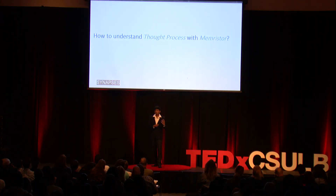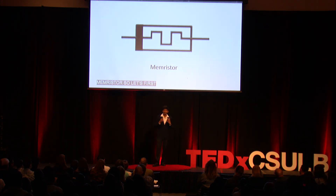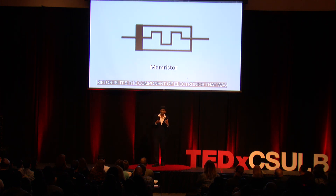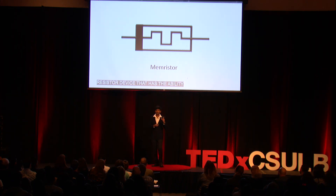How do we understand the thought process with Memristor? Let's first know what a Memristor is. Memristor is the fourth fundamental component of electronics, postulated by Leon Chua in 1971. It is a two-terminal resistive device which has the ability to store memory, and it stores data in the form of resistance.